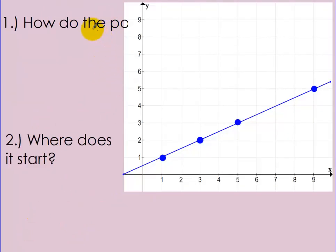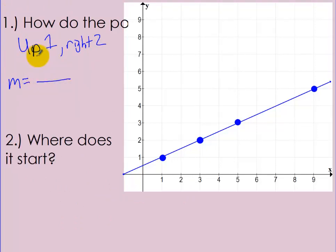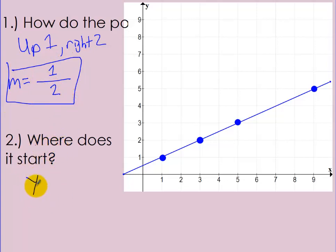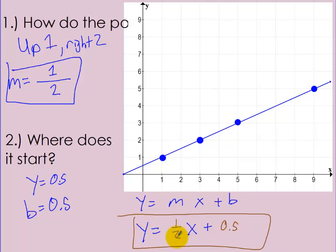Let's go back to the first example. How did the points change? It went up 1 and right 2. So m is a fraction with 1 on top — positive 1 going up — and 2 on the bottom for going right, so m equals one-half. Where does it start? It starts at y equals 0.5, so b equals 0.5. Plugging into y equals mx plus b gives: y equals one-half x plus 0.5. That's your rule for this linear function.